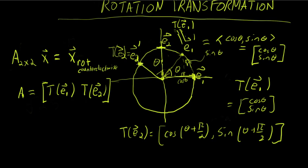That's because the x-coordinate of this point is given by cosine of this big angle, which is theta plus pi over 2. And the y-coordinate is given by sine of that big angle, which is also theta plus pi over 2. So again, we have sine of theta plus pi over 2.